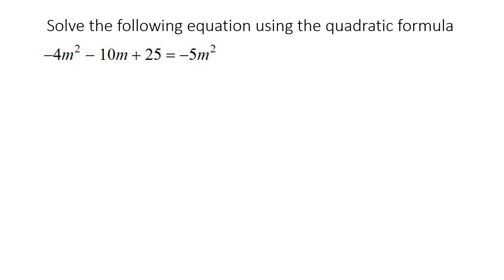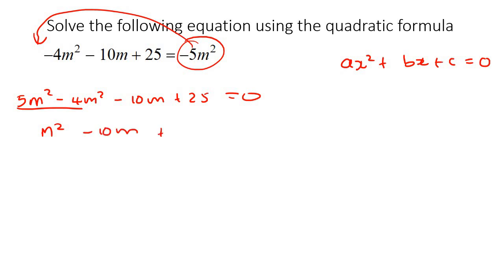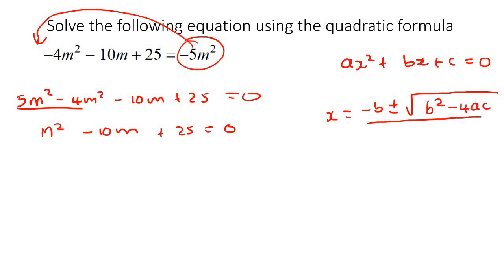Here's our next example. Remember, to use the quadratic formula, it has to be written in standard form with 0 on one side. So all we'll do is take this over to the other side, where it will become a positive. So it's m squared take away 10m plus 25. Let's go use that formula.